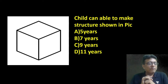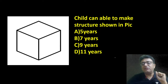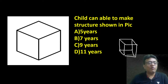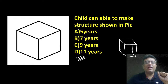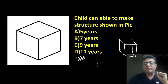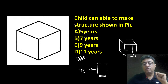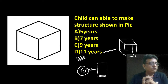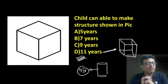This is a cube drawing — we make it by putting two squares and joining them. Child can able to make a cube at 11 years of age. Child can make a cylinder at nine years. Child can make a cube at 11 years.